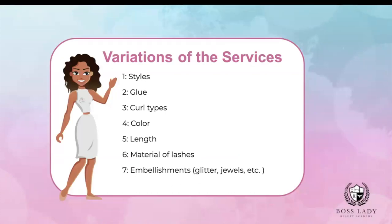Variations of the service include styles, curl types, color, length, material of lashes, and embellishments. You can do a hybrid set and add some color or glitter to make it super fun. When it comes to curl types, you can mix curls — for example, mixing CC and D curl lashes, or C and CC. You can mix C and D. It's all about placement, styling, the mapping, and what fits and complements your client's natural eye shape as well as their face.